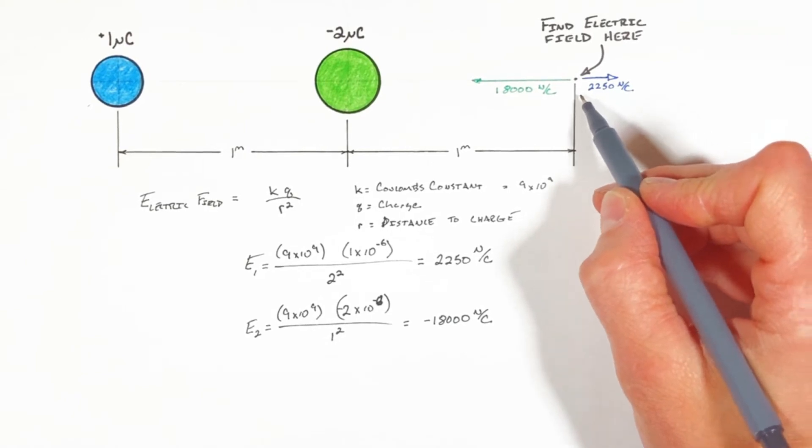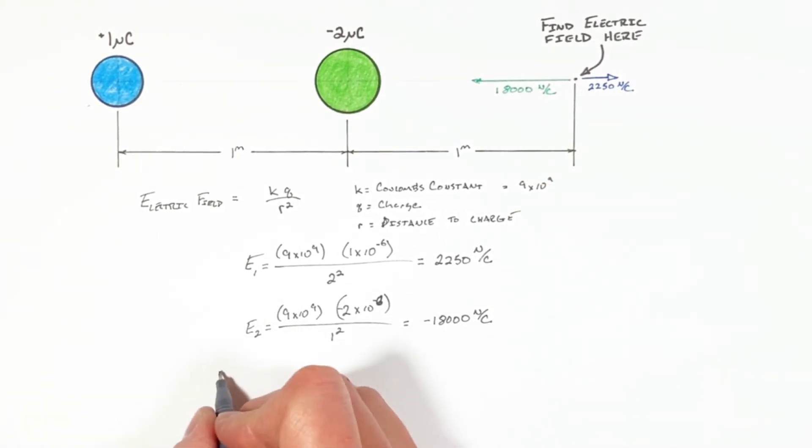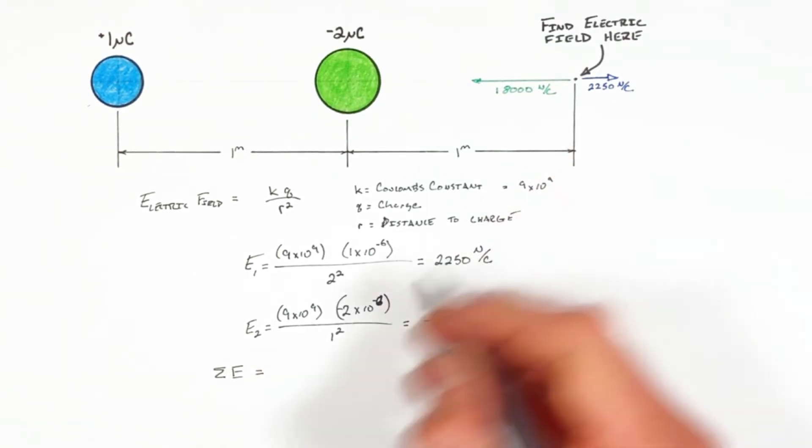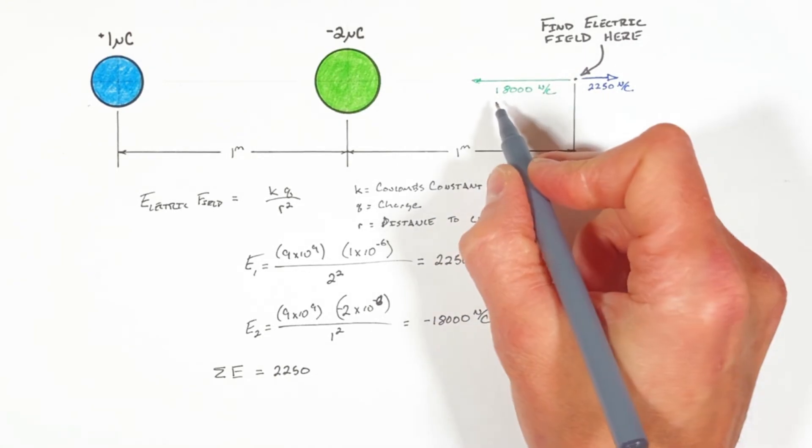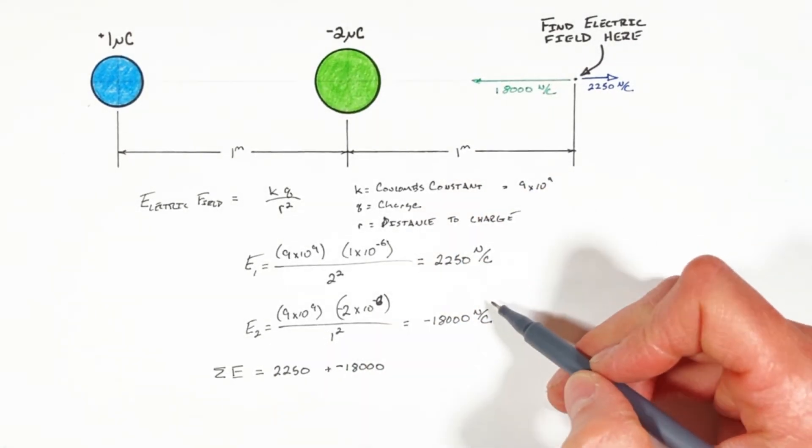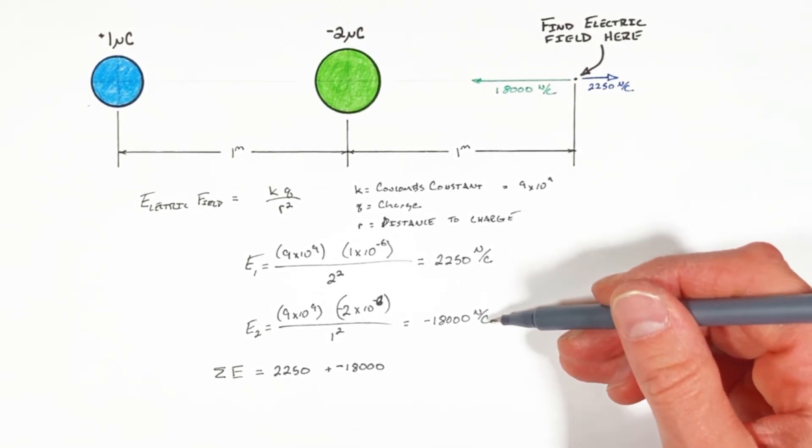Now we've got this 2,250 to the right and these 18,000 to the left. Now I know it seems strange that I just went through to explain to you that the positive here and the negative on this electric field here really weren't all that important. We needed to worry about the direction.